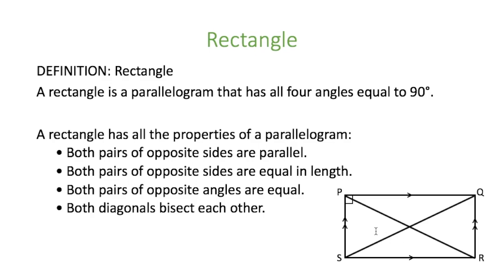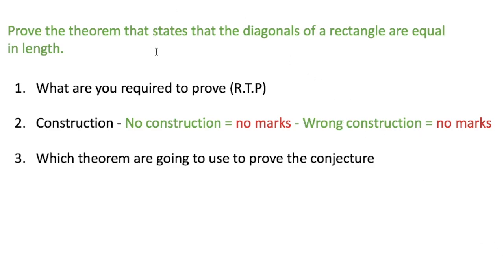The theorem we are proving states that the diagonals of a rectangle are equal, so we're going to prove that PR is equal to QS. For any theorem in any grade, when proving the theorem you must ask yourself: what am I required to prove? Write that down before you start proving. The second thing you must do is the construction — in this case we're going to construct the diagonals. If you don't have the construction, you don't have marks. If the construction is wrong, you don't have marks.